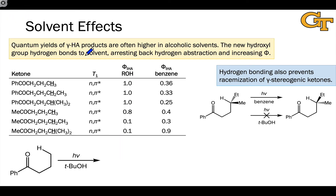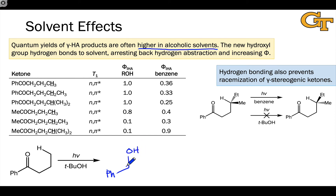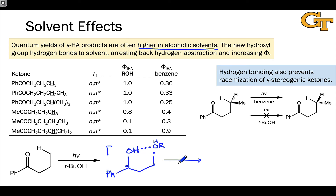Quantum yields of gamma hydrogen abstraction products are often higher in alcoholic solvents than in benzene. This is attributed to hydrogen bonding between the new O-H group of the 1,4-diradical intermediate and the alcoholic solvent. This interaction with the solvent prevents back hydrogen transfer to the gamma carbon, encouraging the reaction to proceed to products — such as radical coupling or other photoproducts — resulting in high overall efficiency.